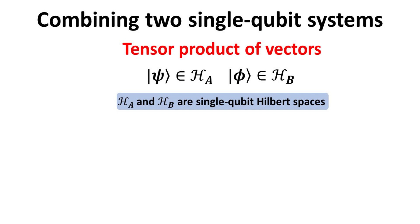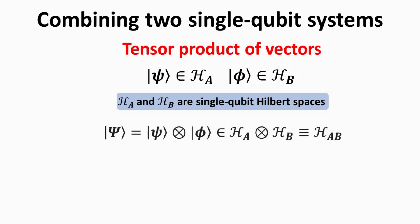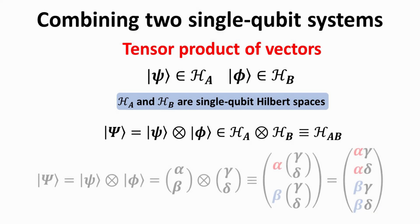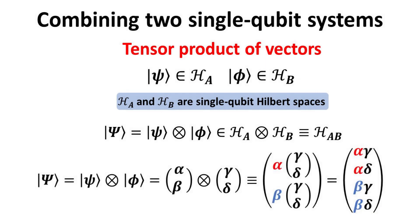Now consider a composite system comprising two qubits, whose state vectors belong to the Hilbert spaces H_A and H_B. The state vector of the composite system, big psi ket, is then given by the tensor product of the state vectors of the constituent systems as shown. We show explicitly how to perform the tensor product of two constituent state vectors. The tensor product takes the dimensionality from 1×2 to 1×4, where each element of the first vector is concatenated with the second vector.